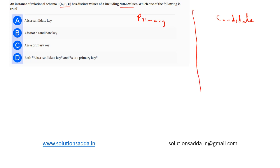Before going to the differences, let's understand what a primary key and candidate key are. Both primary and candidate key can be used to access the tuples in a database — that is the first and foremost point. Now, a primary key is a set of attributes...